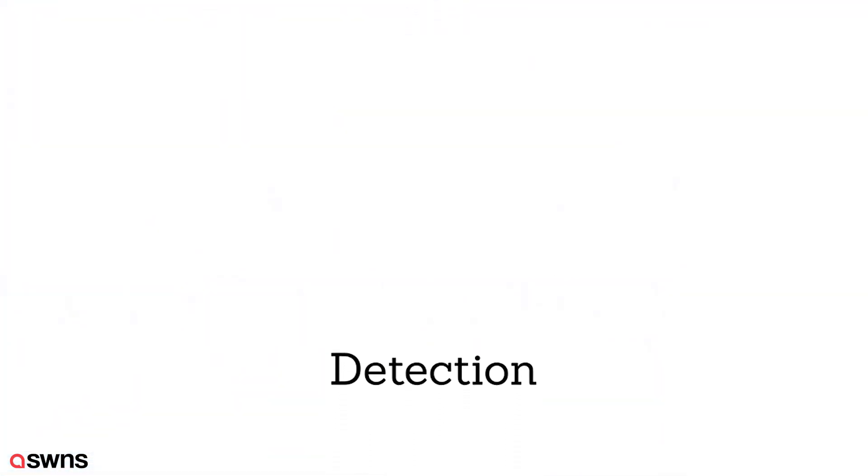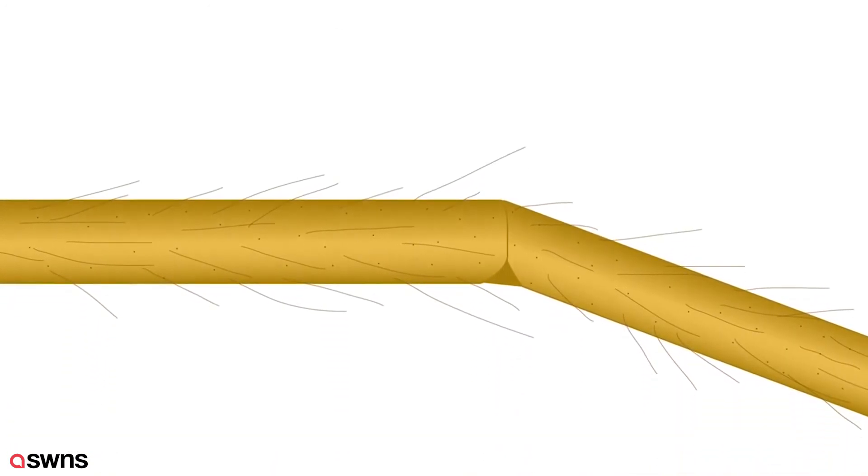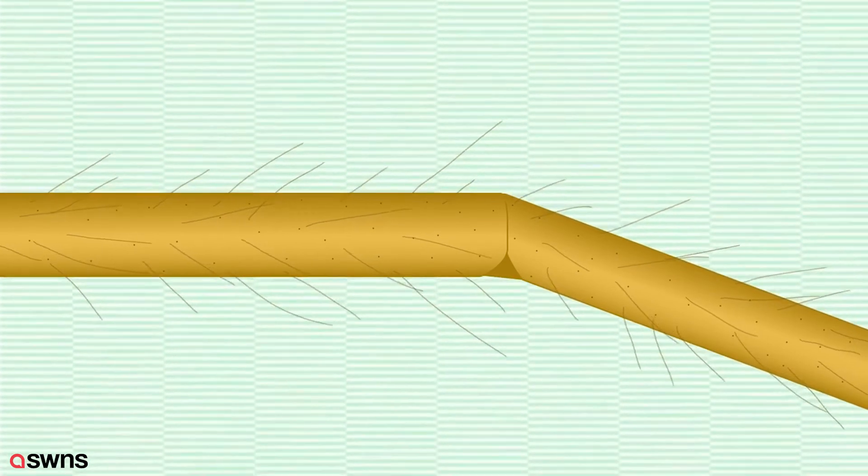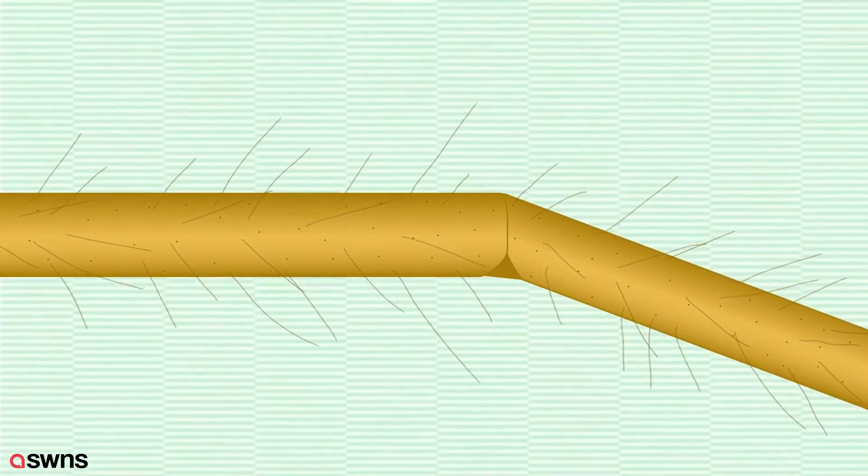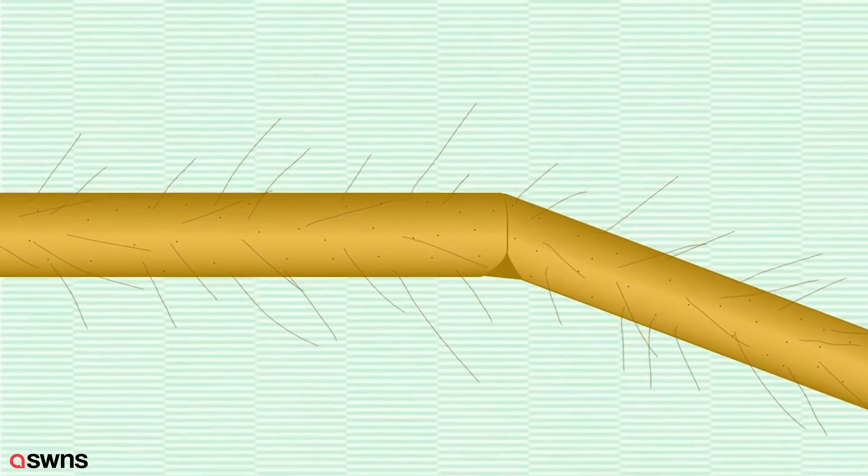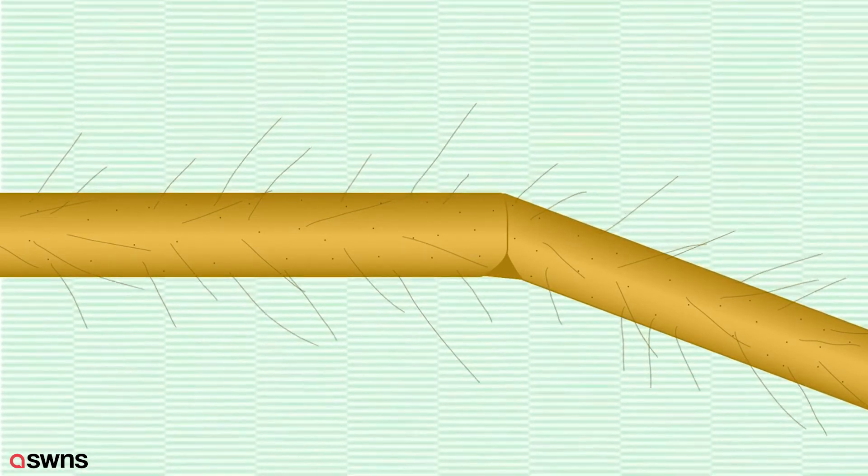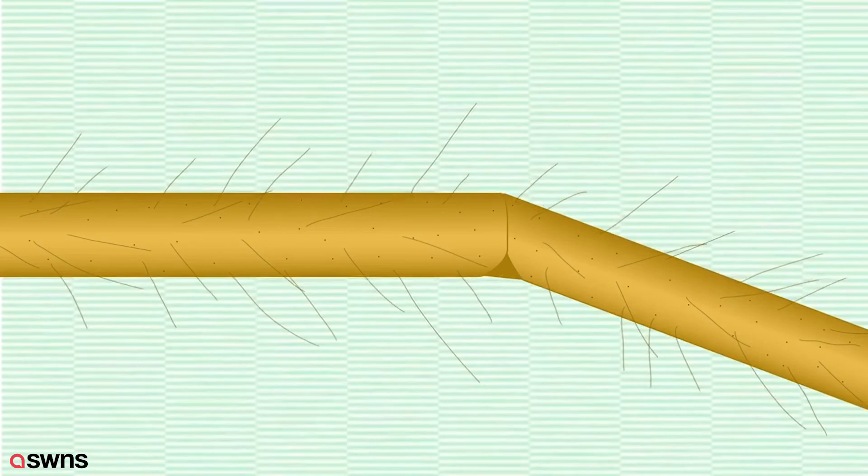So how do the spiders detect these electric fields? In this experiment it was also observed that the minute sensory hairs on the spider's exoskeleton were similarly moved by the electric field. We can then infer that spiders can feel the charge in the air using the same sensory hairs they would use to detect a breeze.